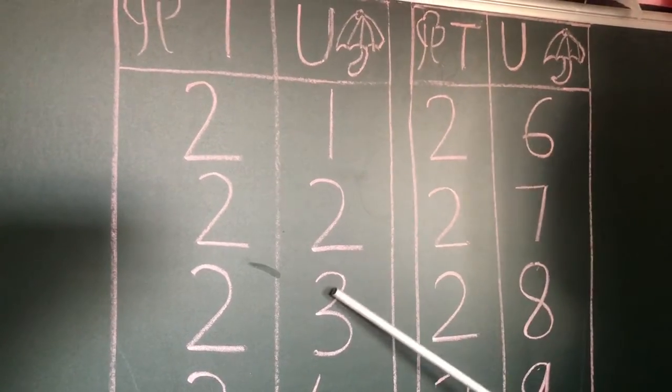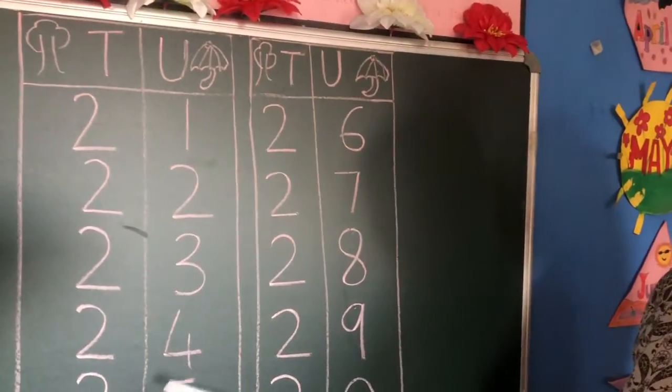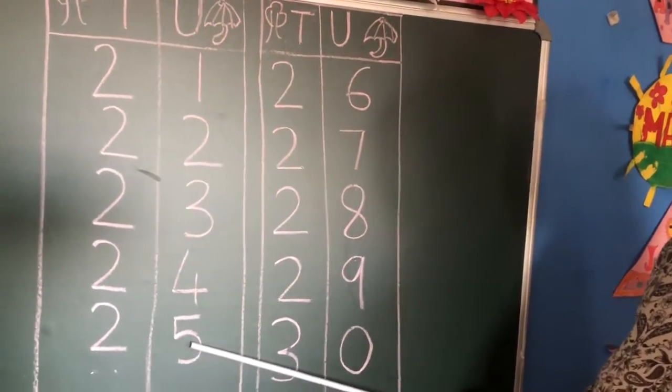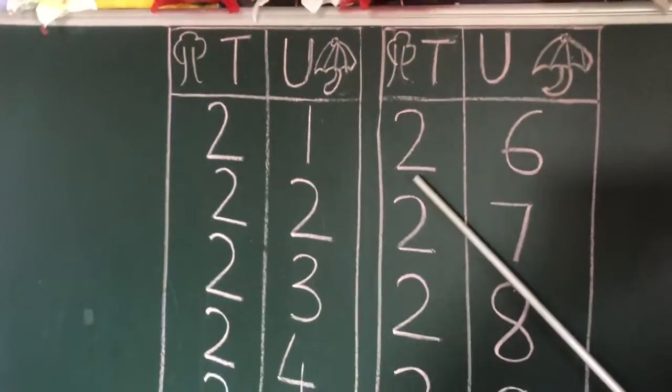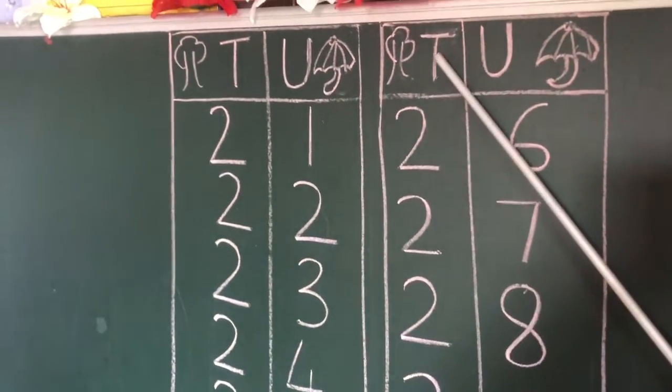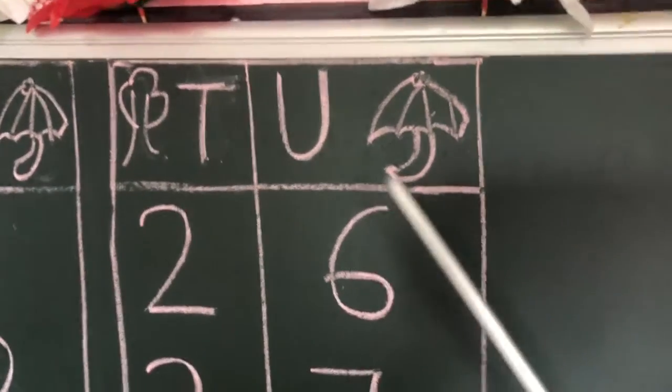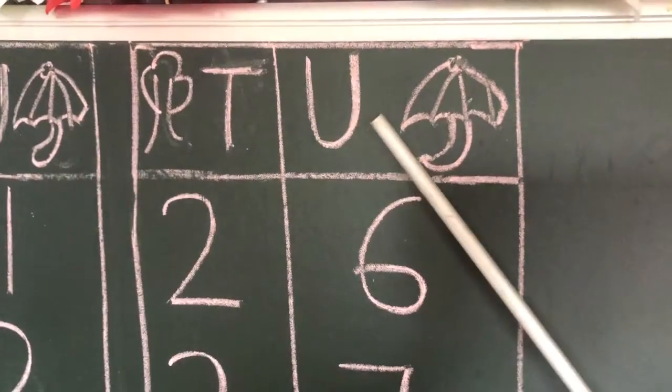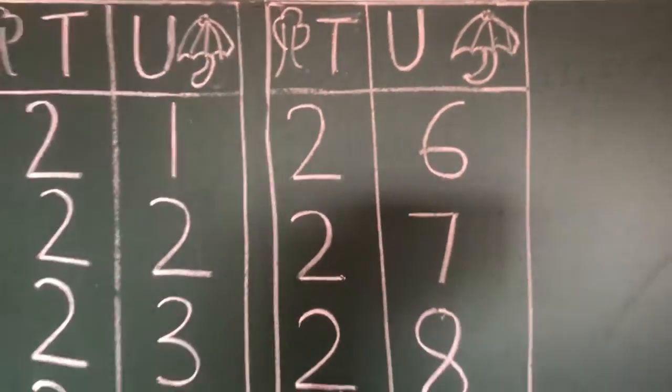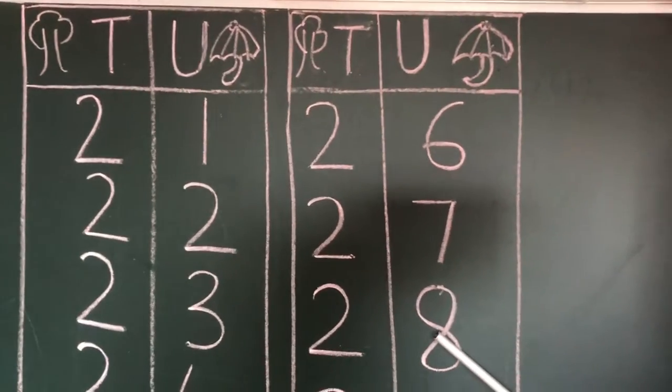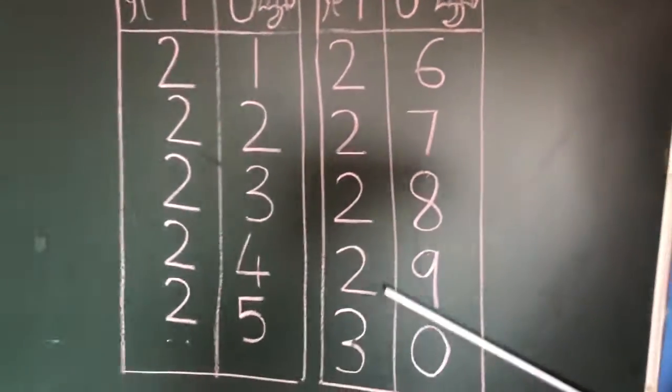Same way you have to write 24, 25. Now again, this is 26. See, this T, 2 is under the tens, that is under the tree, and 6 is under the umbrella, that is in the unit place. 27, 28, 29.